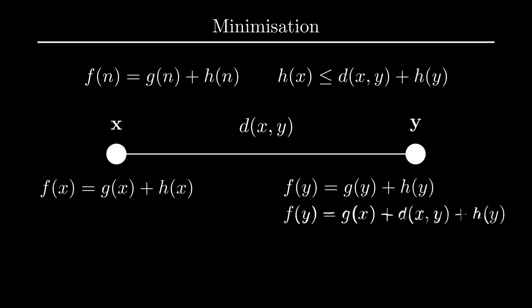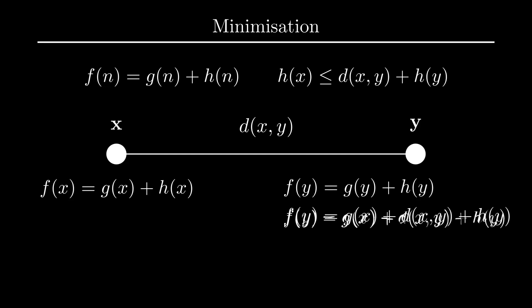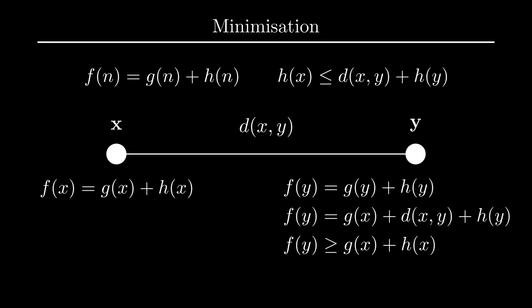The heuristic must satisfy the condition that h(x) ≤ d(x, y) + h(y) for any nodes x and y. Remembering to get our inequalities the right way around, we know that f(y) ≥ g(x) + h(x), which is just f evaluated at x. Like in Dijkstra's algorithm, this means that at each iteration the value of f(x) is non-decreasing, so our algorithm works by going through nodes with smaller distances first, then larger ones, and so on.